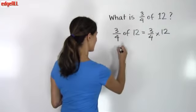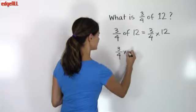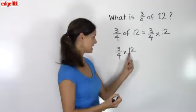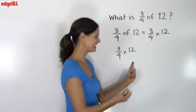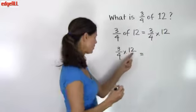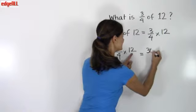So when I am multiplying a fraction by a whole number, you can think of this whole number as being 12 over 1.